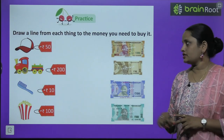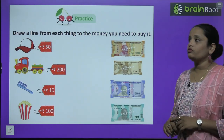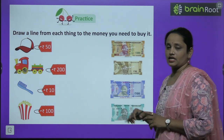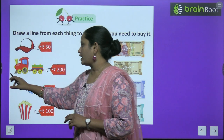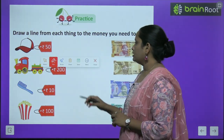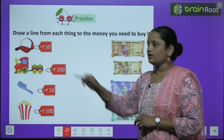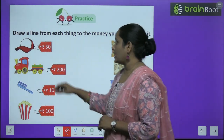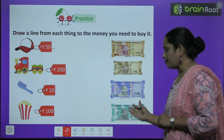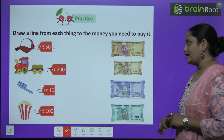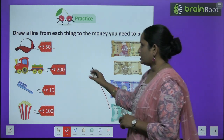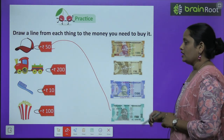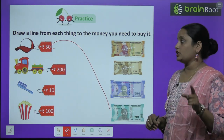Now let's practice. Draw a line from each thing to the money you need to buy it. Here in the first picture you can see a cap which is 50 rupees — so you are matching it to the 50 rupee note. Next is a toy train. How many rupees? 200 rupees.